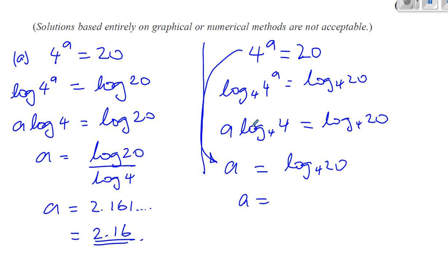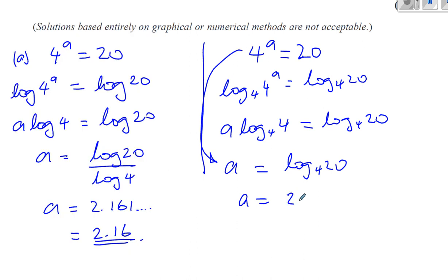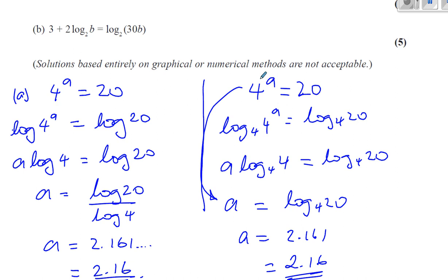Okay, that's just for explanation purposes for you. So now all I need to do is put log to the base 4 of 20, and it should give me exactly the same answer. And it gives me 2.1609, which is 3SF 2.16. Okay, so just showing two different ways of doing the same question. There's no problem with using either one. Now part B.